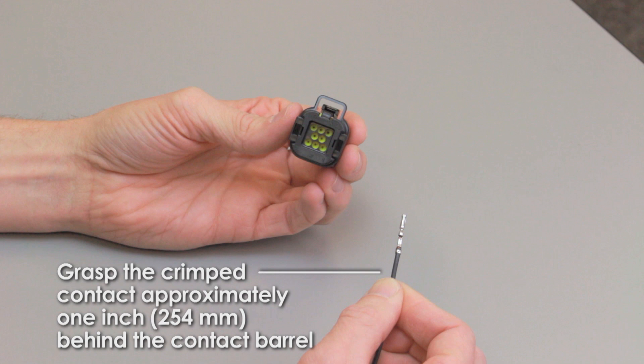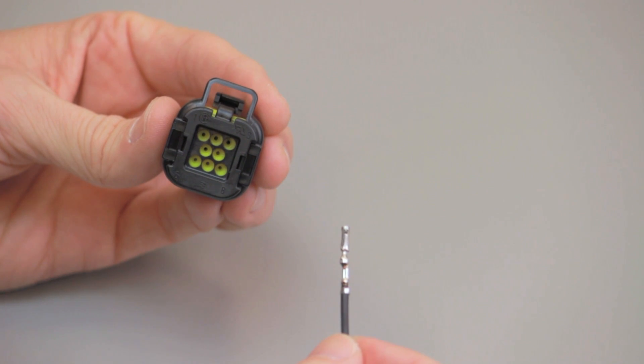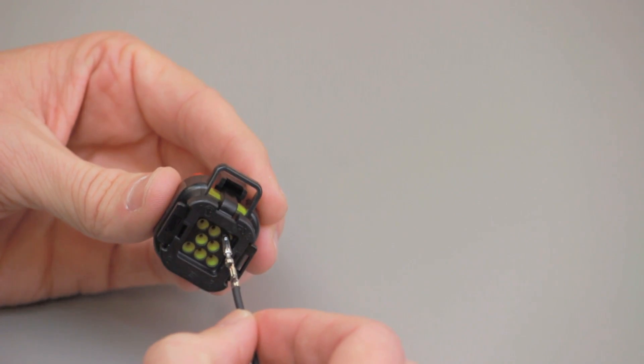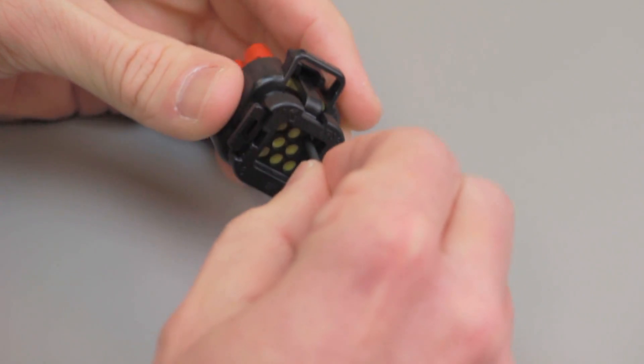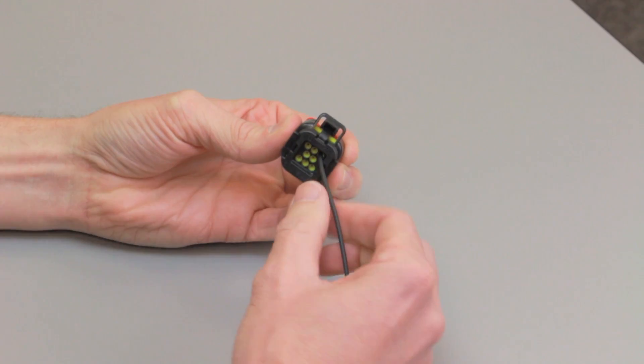Grasp the crimped contact approximately one inch behind the contact barrel. Insert the contact into the connector cavity until you hear and feel a click. A slight tug will verify the contact is locked in place.